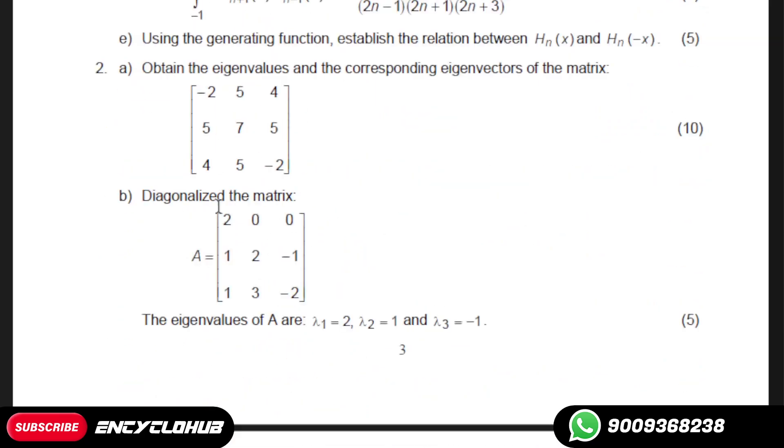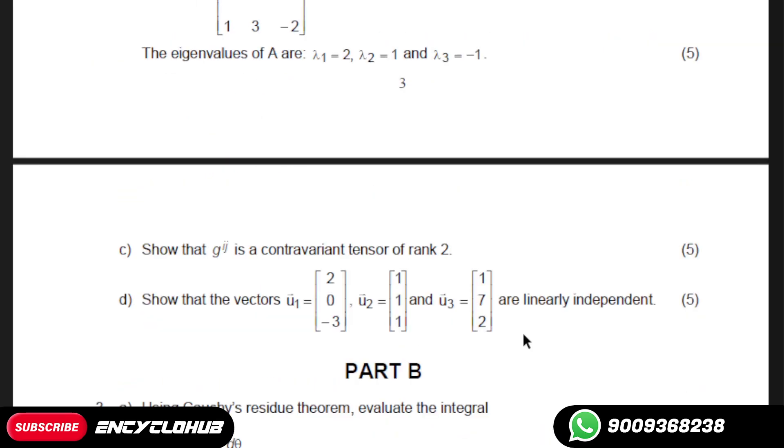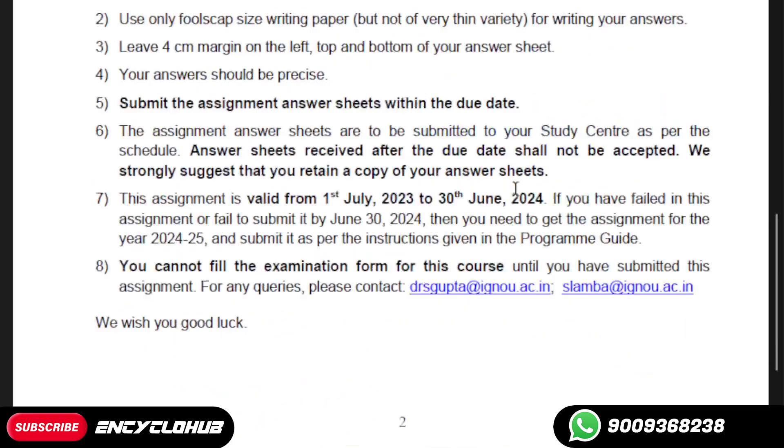Here we are discussing question number 2A and B. Obtain the eigenvalues and the corresponding eigenvectors of the matrix [-2, 5, 4; 5, 7, 5; 4, 5, -2] and diagonalize the matrix [2, 0, 0; 1, 2, -1; 1, 3, -2]. The eigenvalues of A are λ₁ = 2, λ₂ = 1, and λ₃ = -1. If you need the answer to this question, you